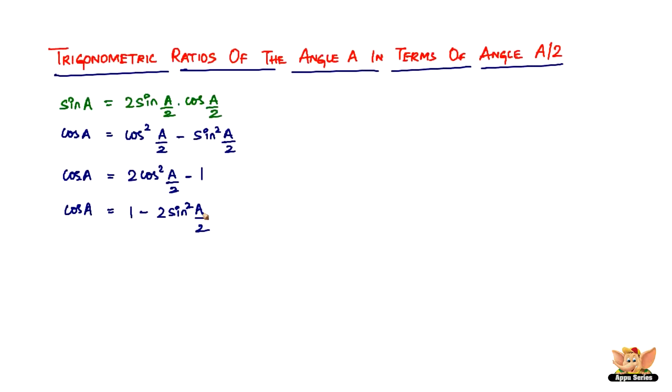So that's the end of cos. We go to the tan part of it. Let's go to tan A. What does tan A look like? Tan A is nothing but 2 tan A by 2 divided by 1 minus tan square A by 2.